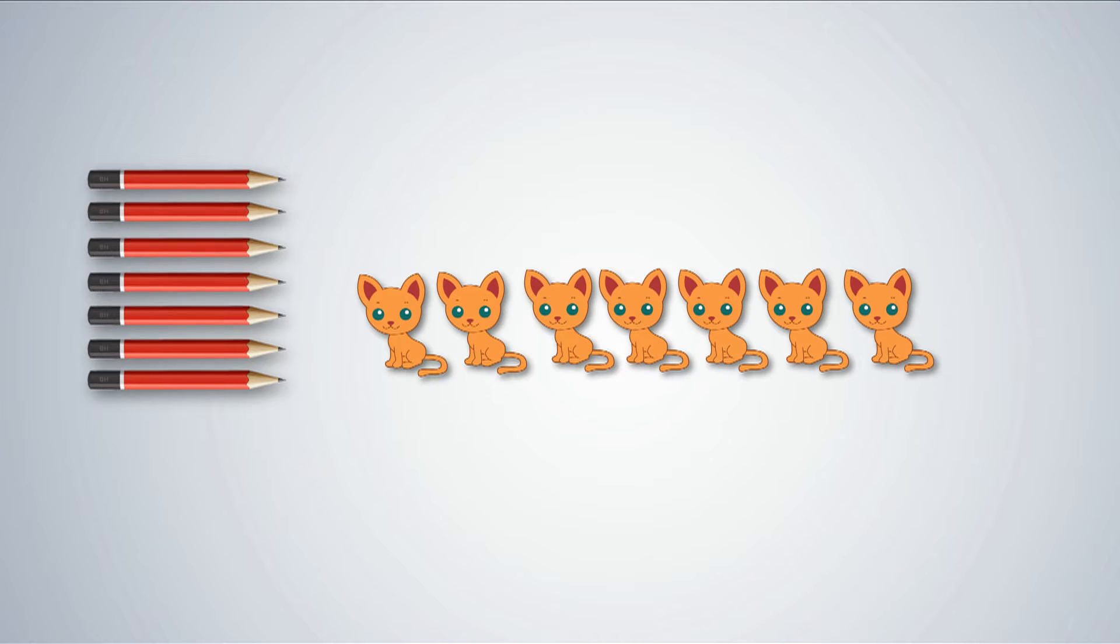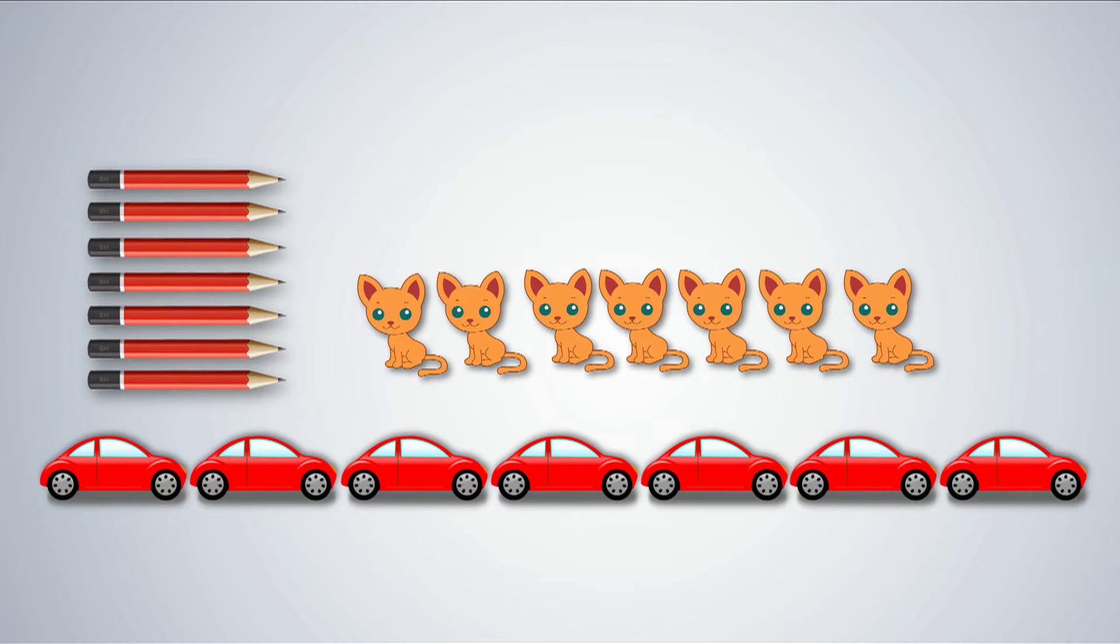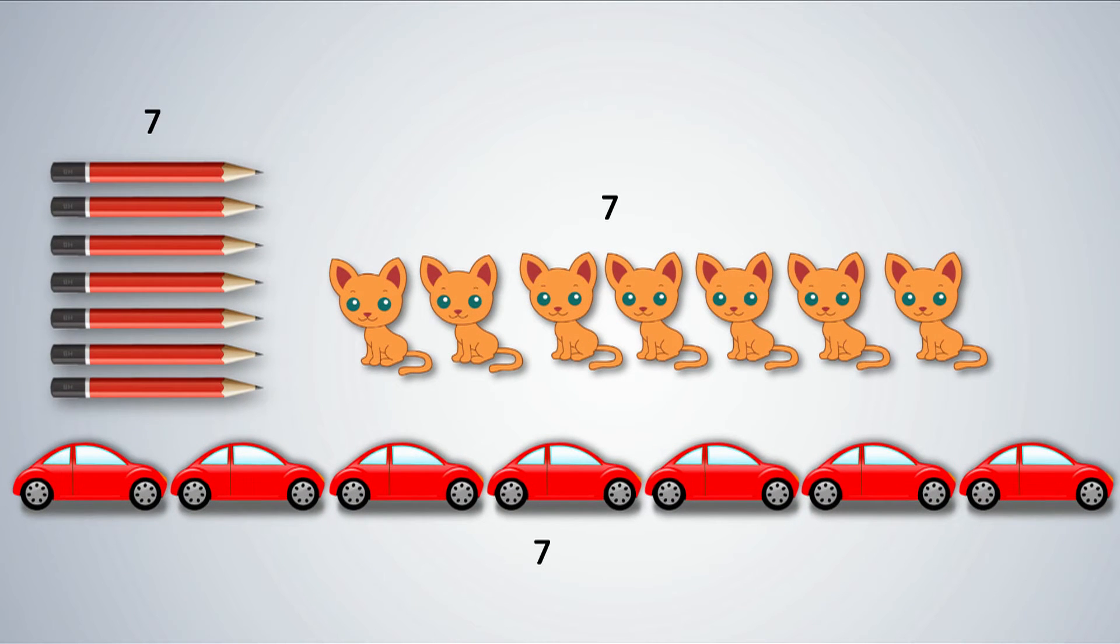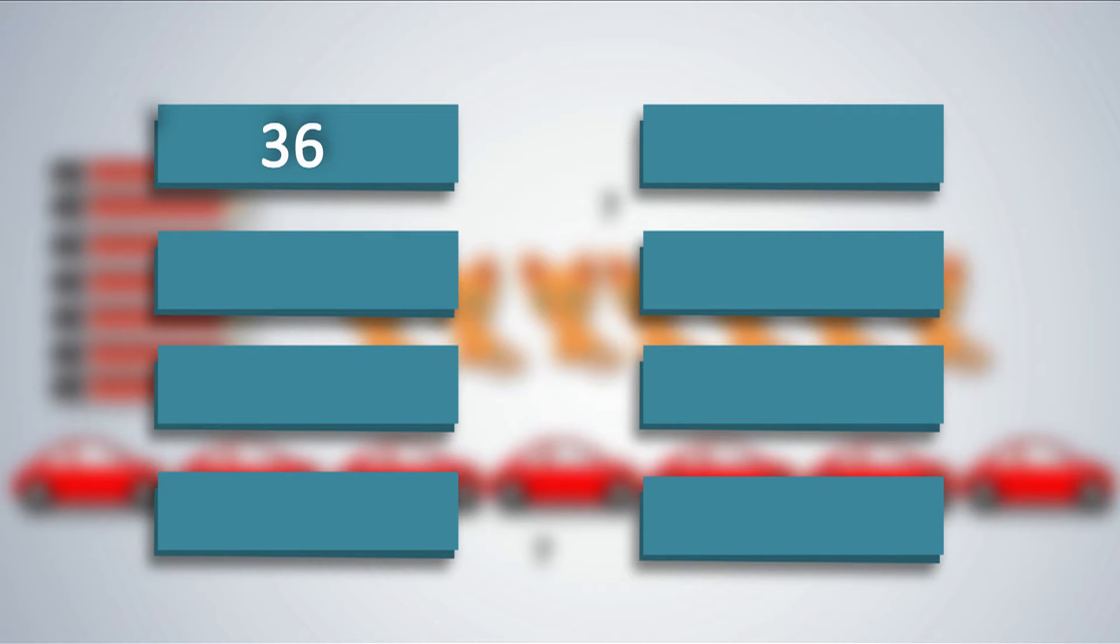When children have learned counting, they will know the mapping of numbers to quantity. For example, 7 of any item refers to the quantity 7. Similarly, as they proceed to counting bigger numbers, they need to understand how to represent bigger quantities with the same digits from 0 to 9. The number system with base 10 blocks enables us to do this by assigning places to the digits.